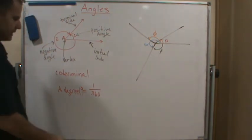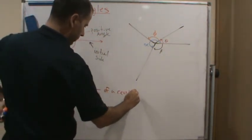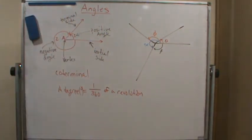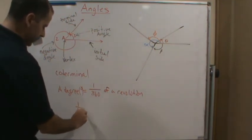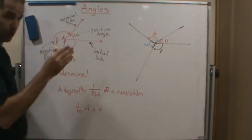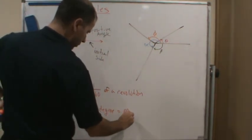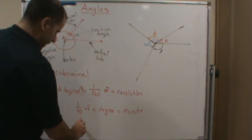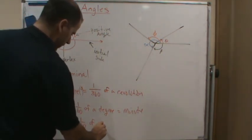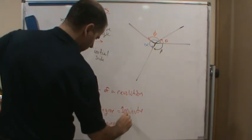A degree is equal to 1/360th of a revolution around a circle. If I take one degree and split it into 60 equal parts, each part is called a minute. If I take one minute and take 1/60th of a minute, that equals one second.